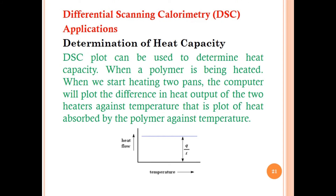By various examples, we will discuss the applications of DSC. For example, determination of heat capacity of a polymer. A DSC plot can be used to determine the heat capacity. Heat capacity is the amount of heat to be supplied to a given mass of material to produce a unit change in temperature — a delta T change. A DSC plot can be used to determine the heat capacity when a polymer is being heated.